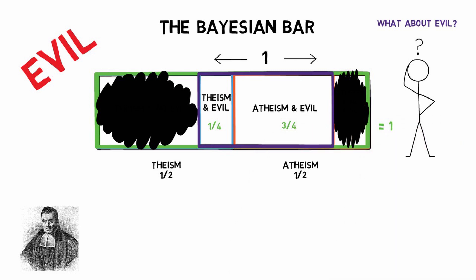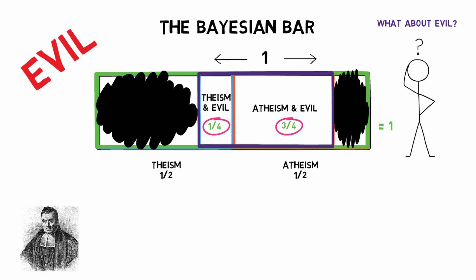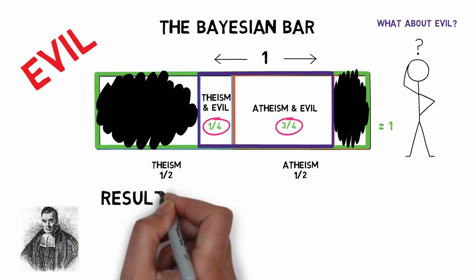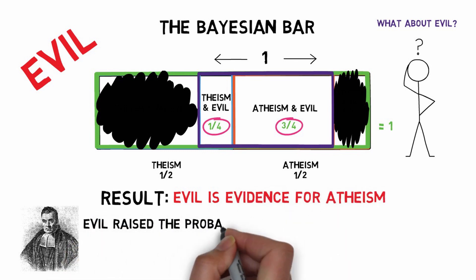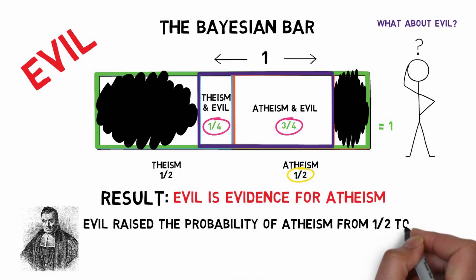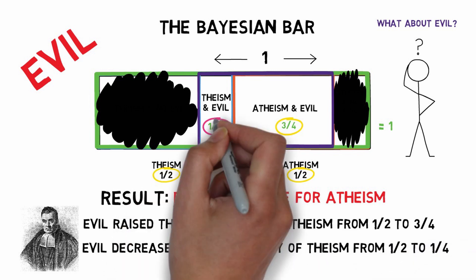This gives our perfect agnostic his final probabilities. Given the existence of evil, he now thinks the existence of God — theism — has the probability of a quarter, or 25%, as only a quarter of his final bar is taken up by theism. On the other hand, he now thinks that atheism has the probability of three-quarters, or 75%. In other words, whilst there might still be a God who has chosen to allow evil, it's more likely that God doesn't exist given the existence of evil. The overall result is therefore that evil is evidence for atheism, because evil raised the probability of atheism from a half, represented in our initial bar, to three-quarters in our final bar. And evil decreased the probability of theism from a half to a quarter.